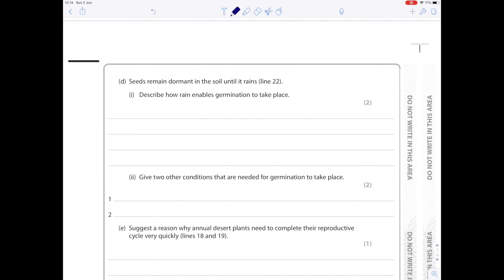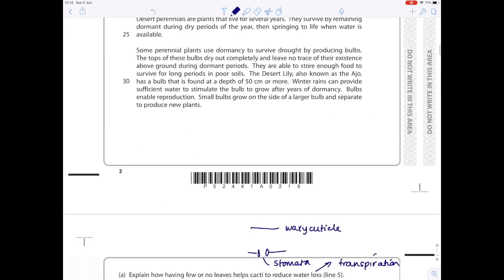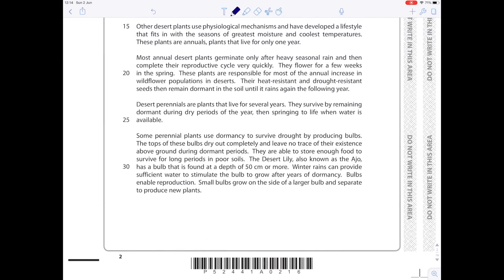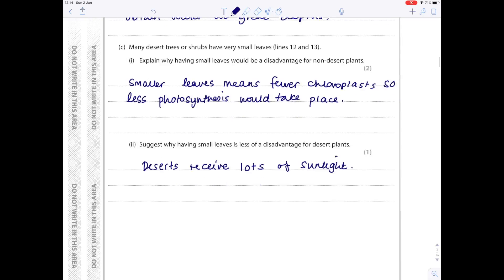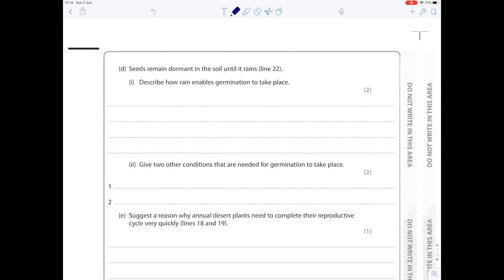Seeds remain dormant in the soil until it rains, line 22. Describe how rain enables germination to take place. Line 22 says their heat-resistant and drought-resistant seeds remain dormant in the soil until it rains again the following year. Again, it doesn't tell us anything. So why might you need water? You can answer this in lots of different ways. Potentially, it could help the seed coat to split. Water also helps activate the enzymes, and it also helps in the digestion of starch found within the seed.